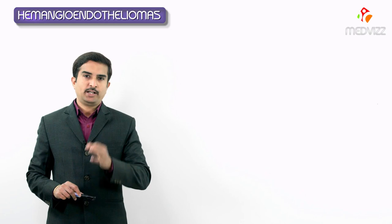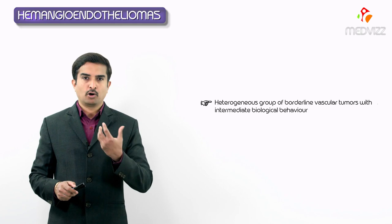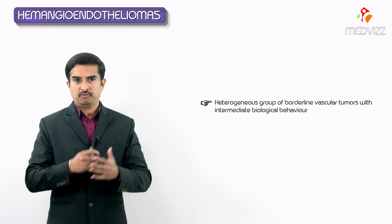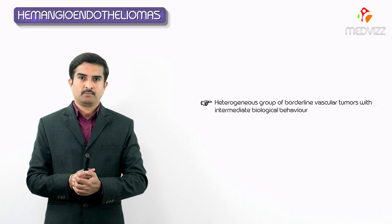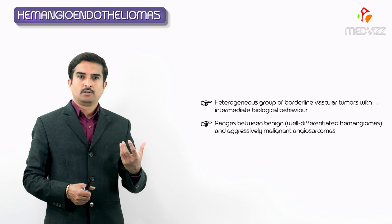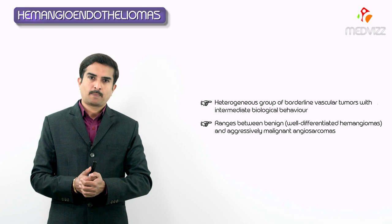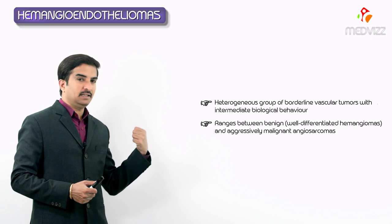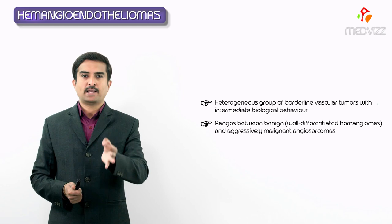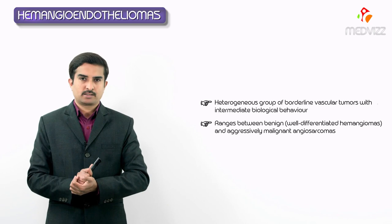Hemangioendotheliomas comprise a heterogeneous group of borderline vascular neoplasms with an intermediate biological behavior. When we say intermediate biological behavior, the behavior of these neoplasms falls between benign well-differentiated hemangiomas and aggressively malignant angiosarcoma. That is the reason we call them borderline vascular neoplasms, falling between the benign and the most aggressive malignant ones.